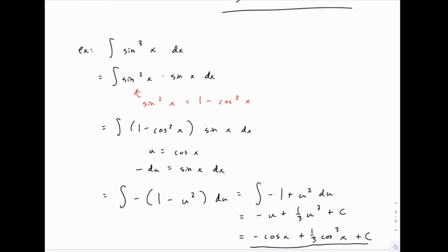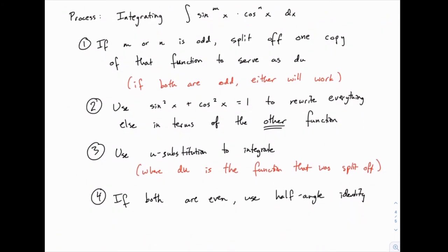This brings us to our general procedure for integrating sine to some power times cosine to some other power. The general process hinges on looking for an odd power and splitting that off to serve as du. The first thing you'll do is look for one of the powers being odd. If both happen to be odd, you can choose either one — whichever is smaller will generally be easier to work with, and we'll see an example of that later on.